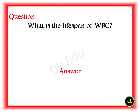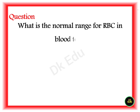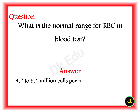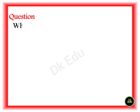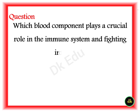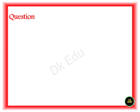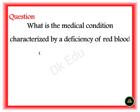Q: What is the normal range for RBC in a blood test? A: 4.2 to 5.4 million cells per microliter for women and 4.7 to 6.1 million cells per microliter for men. Q: Which blood components play a crucial role in the immune system and fighting infections? A: WBC. Q: What is the medical condition characterized by a deficiency of RBC or hemoglobin? A: Anemia.